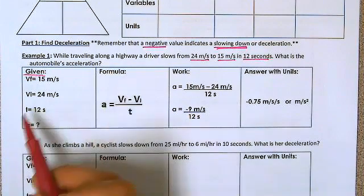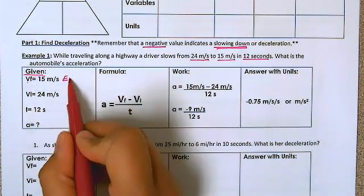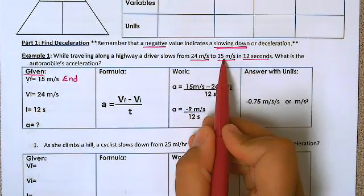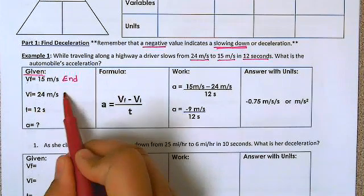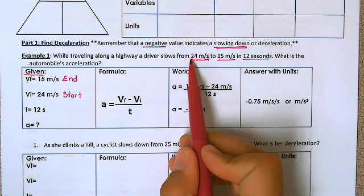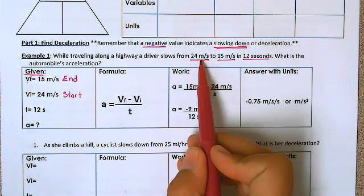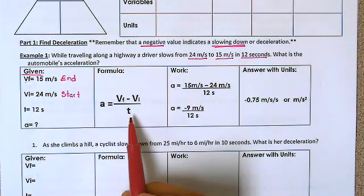Remember that the final velocity is how fast it's going at the end. So in this case that's going to be 15 meters per second and the initial velocity is how fast it's going to start at. So it's starting at 24 meters per second and the time is 12. So we're going to plug that into our formula.